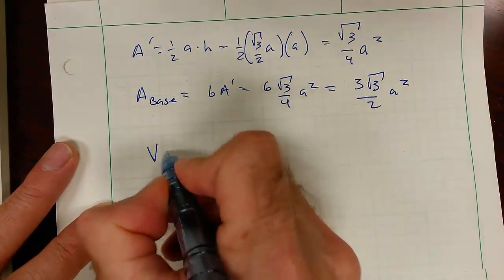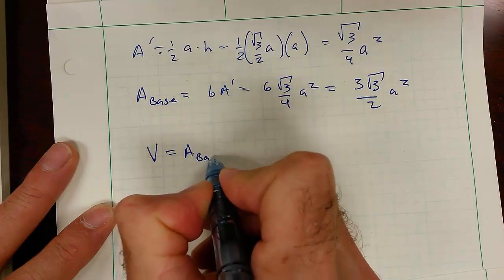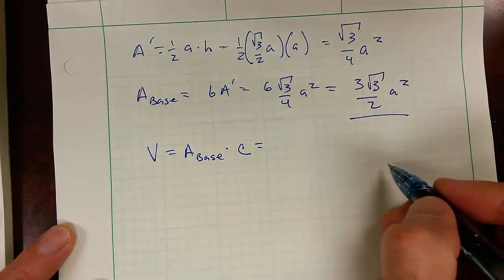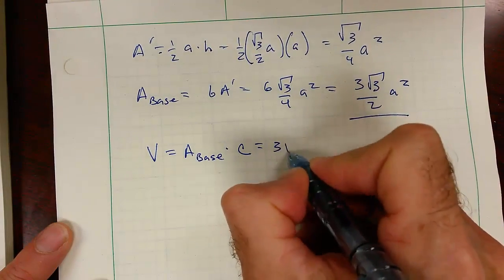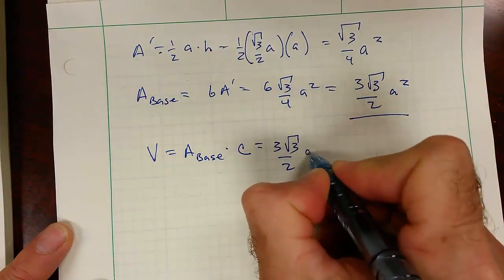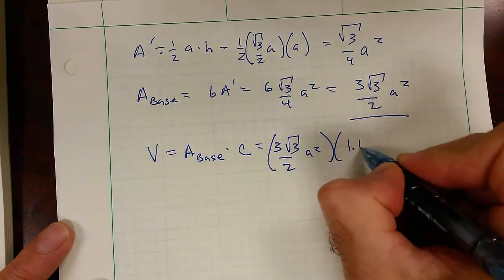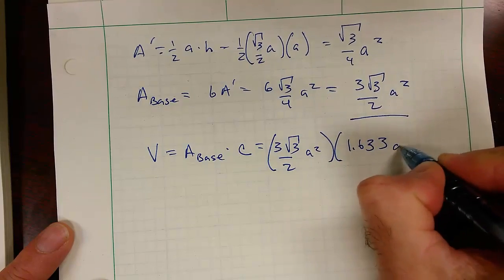And the volume of the cell is the area of the base times the height. Area of the base is 3 square root of 3 over 2 a squared. C for this particular geometry is 1.633 a.